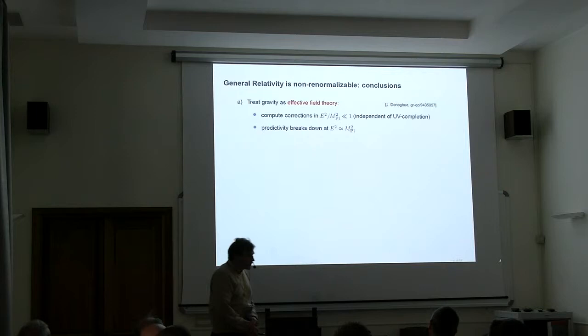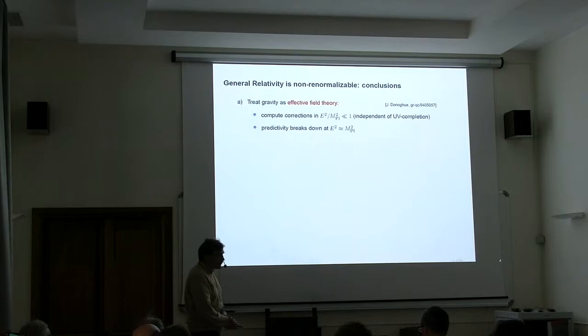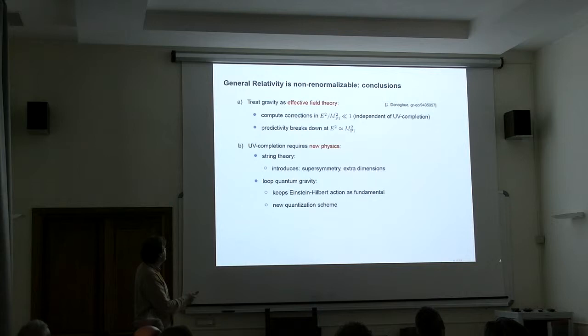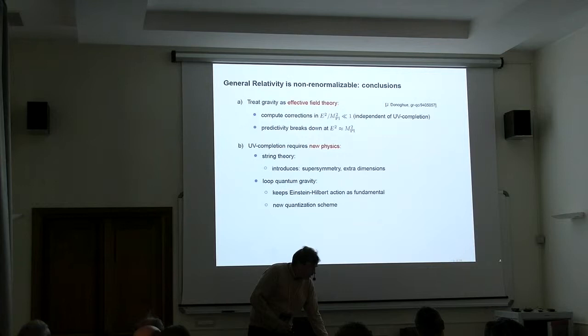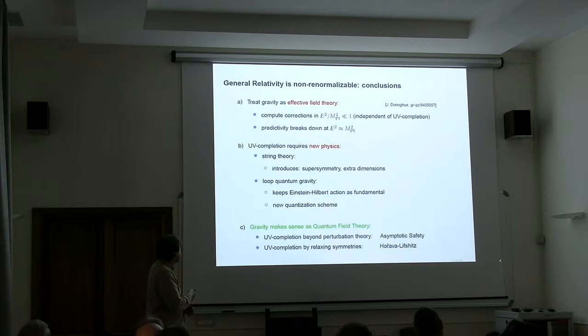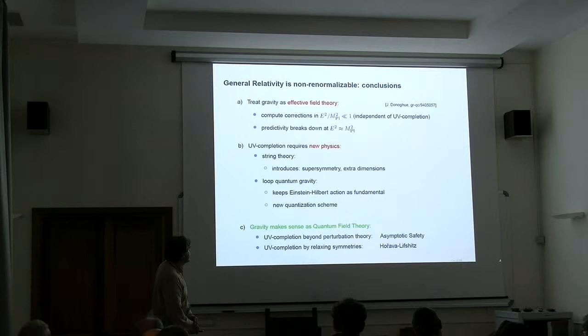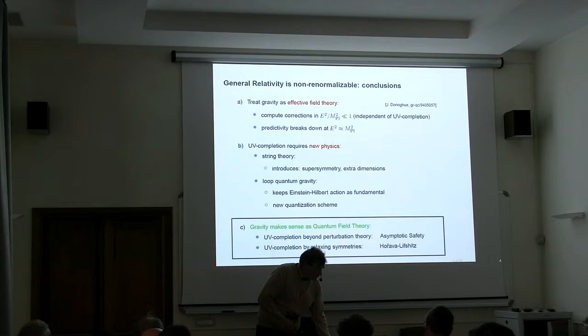This probably goes wrong if you look at processes with energies comparable to the Planck scale. Then you need to determine an infinite number of coupling constants by experiment. You can say maybe we should go for new physics. We also heard talks on this: string theory being one option, and talks about loop quantum gravity. Asymptotic safety takes a different take on this story. The conjecture is that gravity still makes sense as a quantum field theory. The failure is not in quantum field theory per se; it's a failure of perturbation theory. So we are looking for a non-perturbative UV completion of the theory. This will set the topic of the talk.